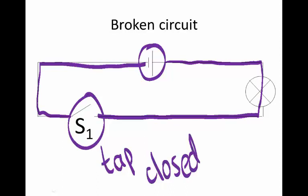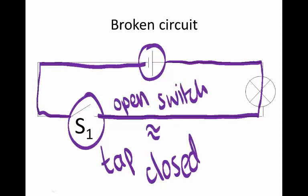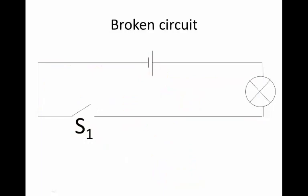A closed tap is like an open switch. So you know that if you close the tap, the water can't flow anywhere in the pipes until you open the tap. Similarly in electricity, you have to close that switch, and then the current will flow — as you can see by the bulb shining. So this here is a broken circuit.